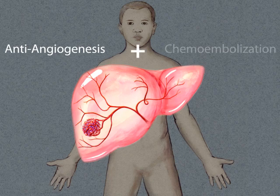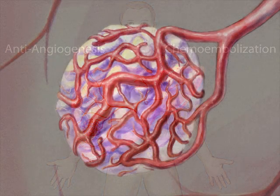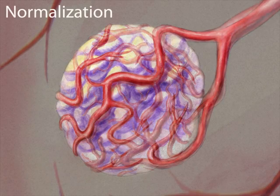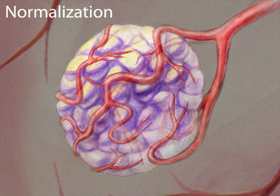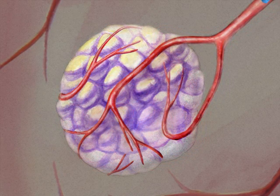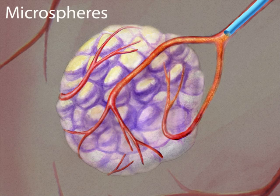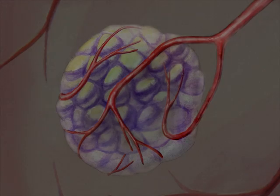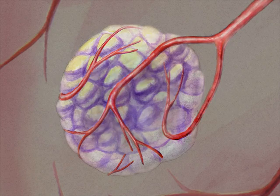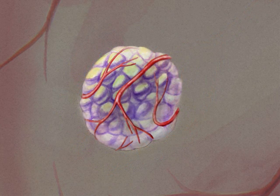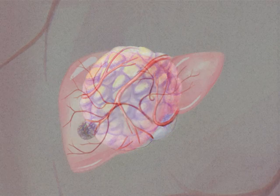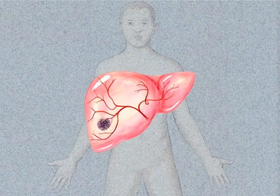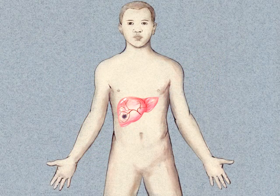Because anti-angiogenic drugs and chemo embolization work differently, sometimes they can be given together. Tumor vessels normalize when given anti-angiogenic drugs, and these normalized vessels may provide a better route for microspheres to reach more of the tumor. The combination of both therapies may work better than using each therapy alone, and may help people with liver cancer live longer.